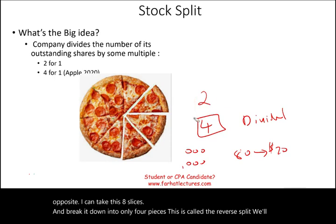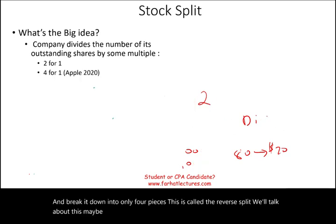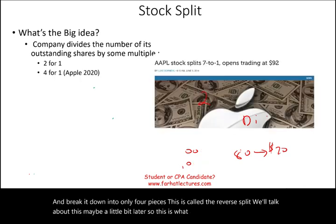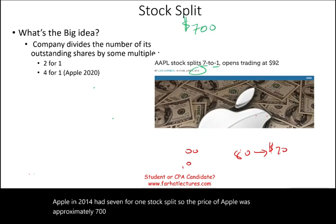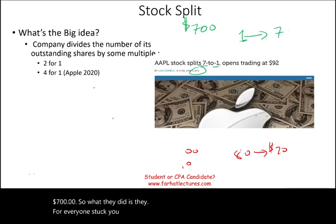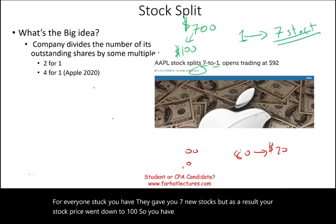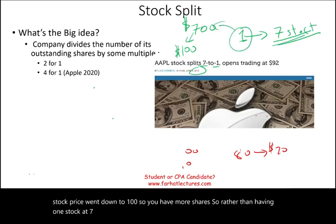That opposite is called the reverse split. For example, Apple in 2014 had a seven-for-one stock split. The price of Apple was approximately $700, so for every one stock you had, they gave you seven new stocks. As a result, your stock price went down to $100. Rather than having one stock at $700, now you have seven shares at $100 each — you still have $700.